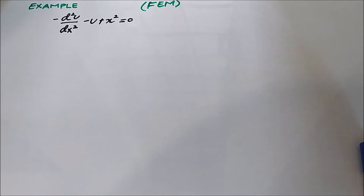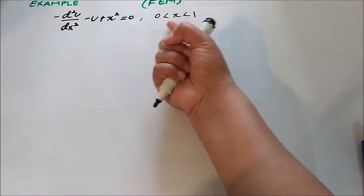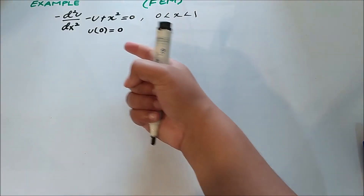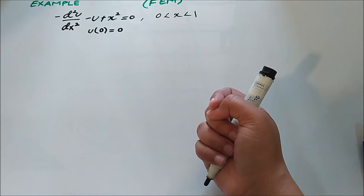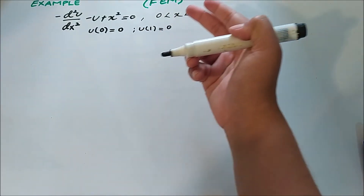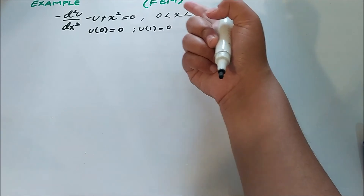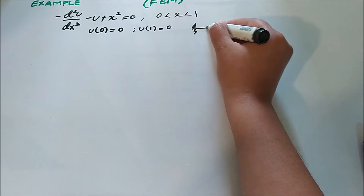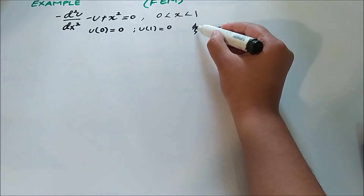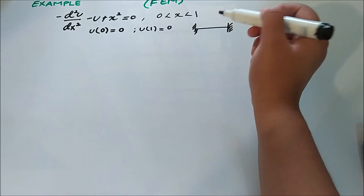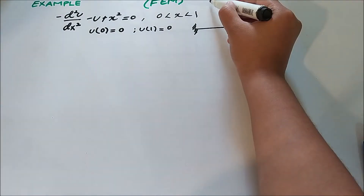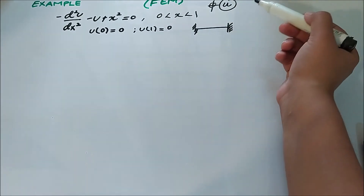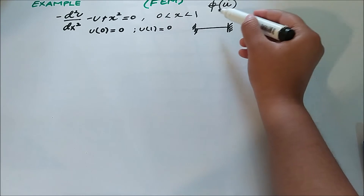The domain is from zero to one. The two boundary conditions are: displacement at the first end equals zero, and displacement at the other end also equals zero. So displacement at both ends of the domain is zero, which implies that the bar is fixed from both ends — there is no displacement at either end.